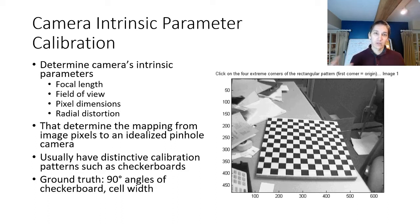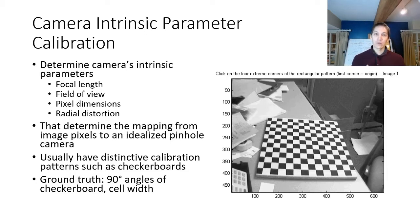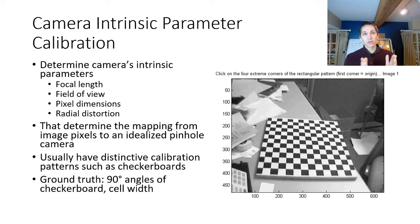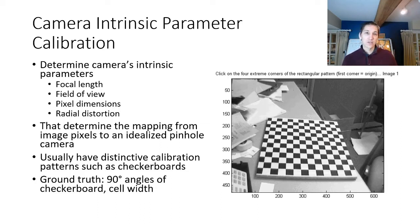To calibrate intrinsic parameters, we wave distinctive patterns in front of the camera — for example checkerboards. We use the ground truth that we know the width of the cells of the checkerboard, that the checkerboard corners are formed at 90 degrees, and we know the number of cells. From this we can determine that lines in the checkerboard should be parallel, and the spacing of these cells in world space should be a certain distance apart.